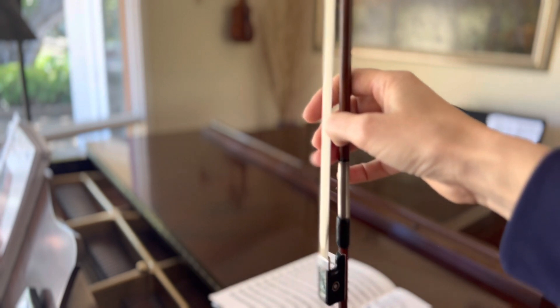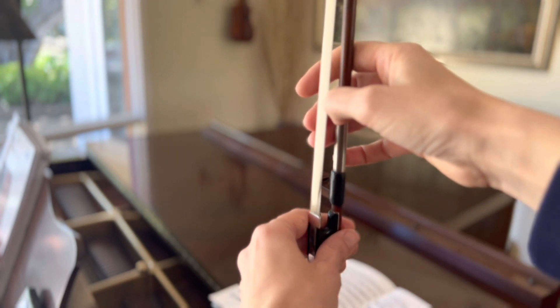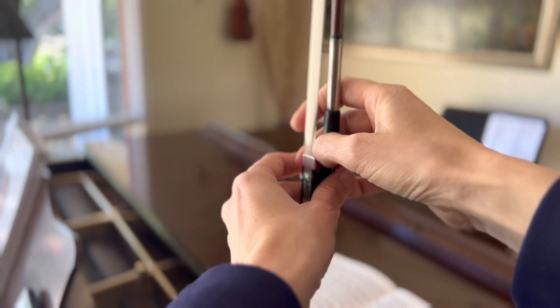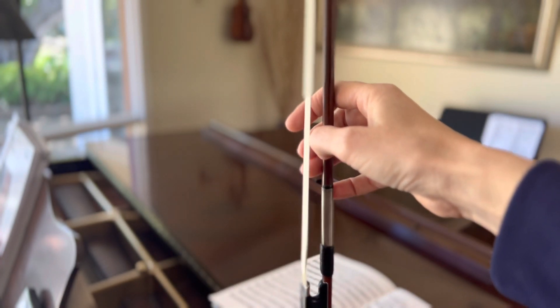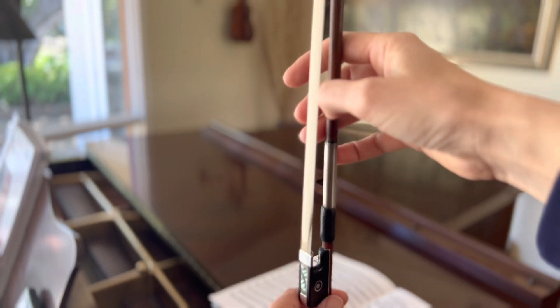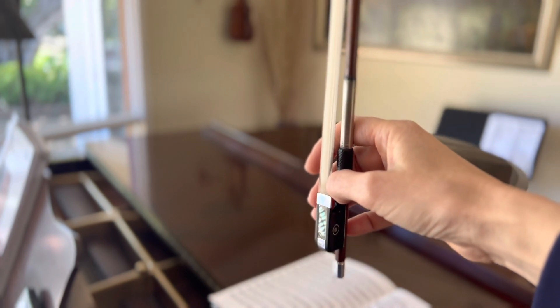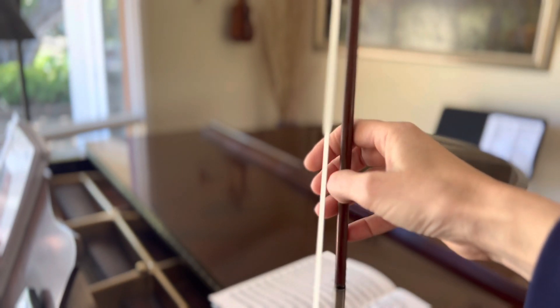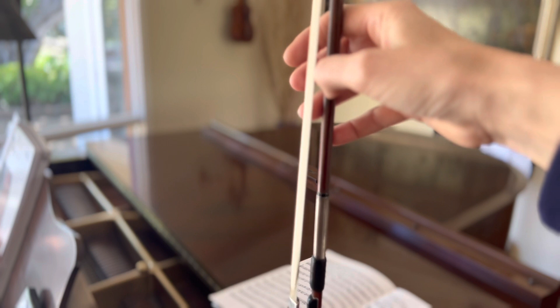And now you're going to do the same thing with a very feather light touch. Let the bow slip a few inches and catch it with your thumb again pressing in towards the pinky.